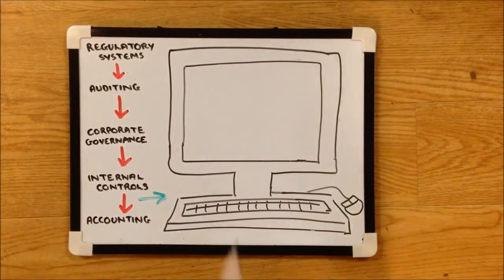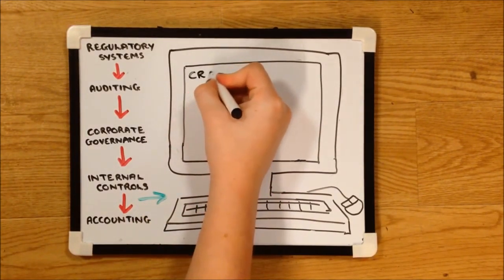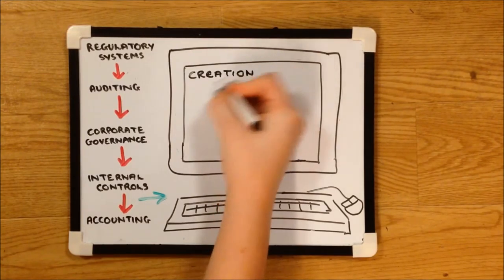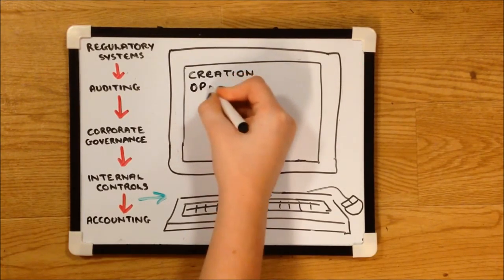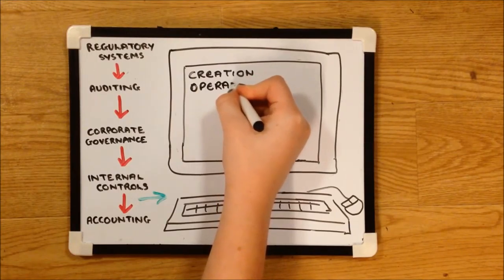As controls become more automated, Tesco need to ensure they can rely on their IT systems. The creation, operation, authorisation and monitoring of the system should be carried out by different people.